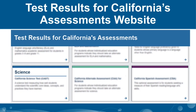Educators as well as the general public can also get CAST data from the California Department of Education's Test Results for California Assessments website at casp-elpac.ets.org. From there, select the assessment for which you would like to view results — in this case, Science — to view results for the CAST.